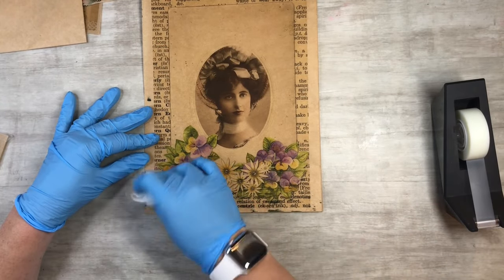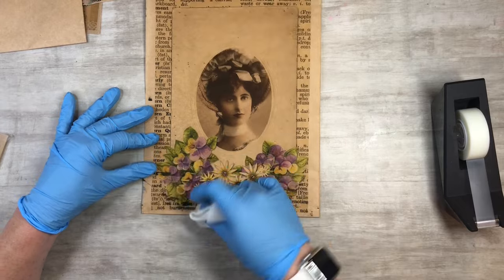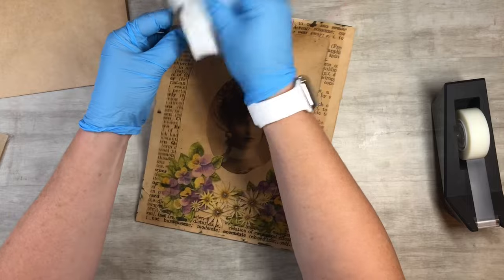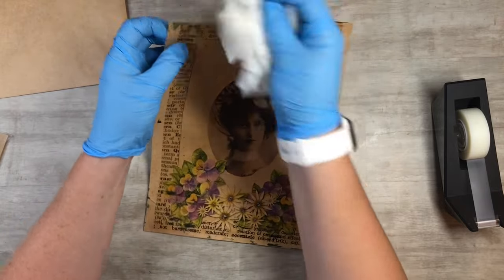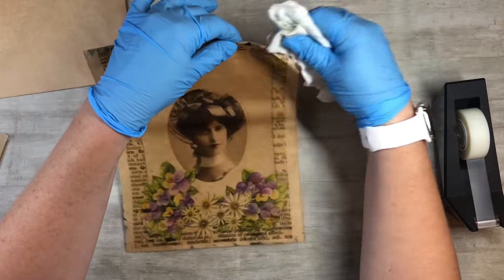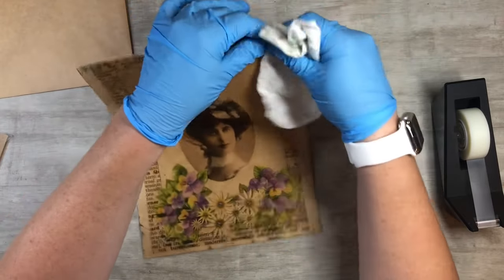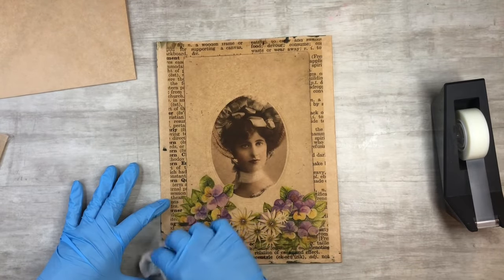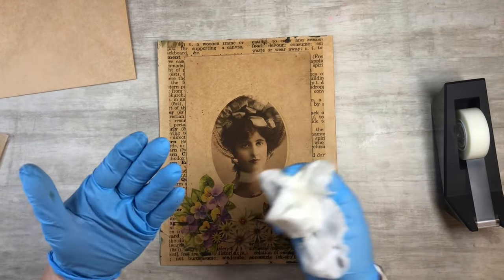Because I do have the bleeding that happens and I'm not sure why or if it's just mine that's doing it, but I kind of like the look of it. So I just take like a baby wipe or a tissue or a napkin or something, paper towel, and just kind of blot it.